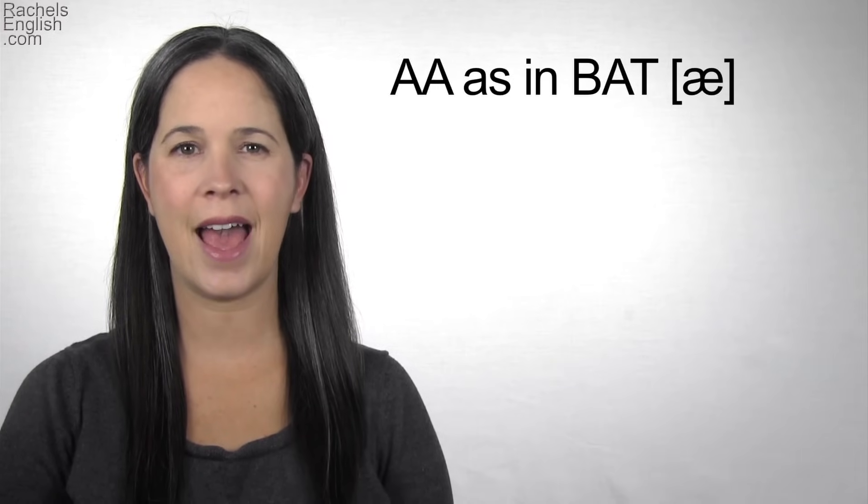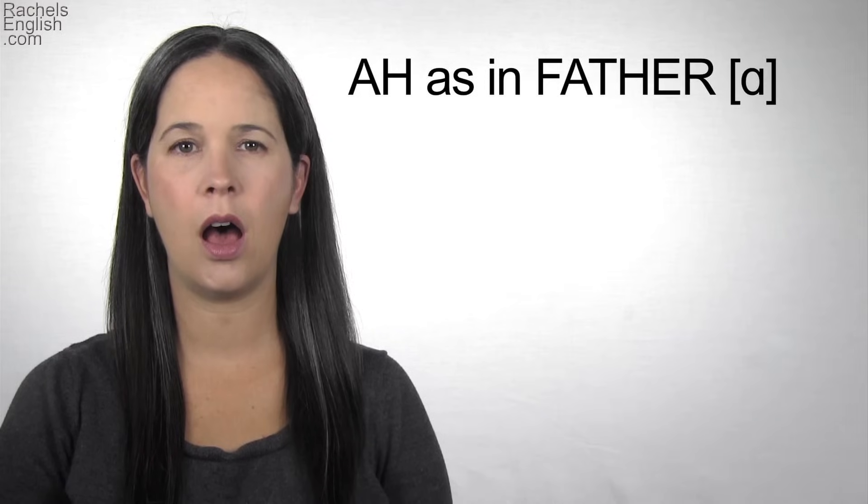Because the tongue is high in the back and low in the front, you can see a lot of it. This is different from the AA as in father vowel, for example, where the tongue presses down in the back and you see more dark space in the mouth.